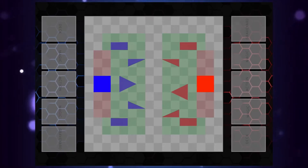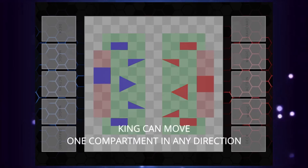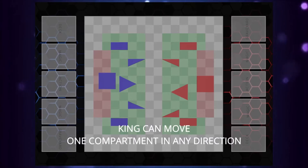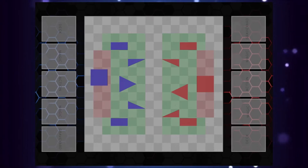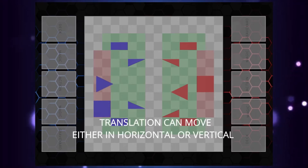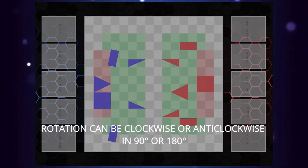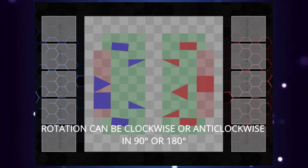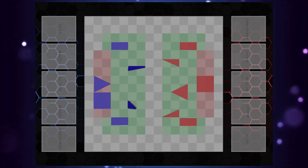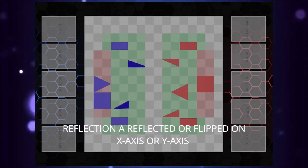Chesute pieces consist of the king, rotation, reflection and translation forms. The king can move one compartment in any direction. The translation form pieces can move either horizontally or vertically. The rotation form moves in either 90 degrees or 180 degrees. For the reflection form, the pieces are reflected or flipped on the X axis or Y axis.